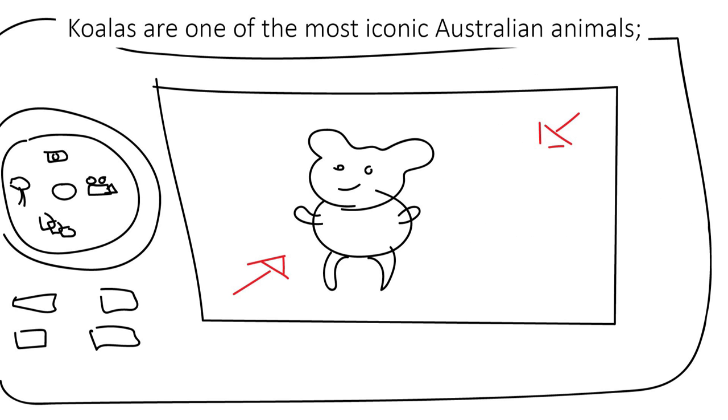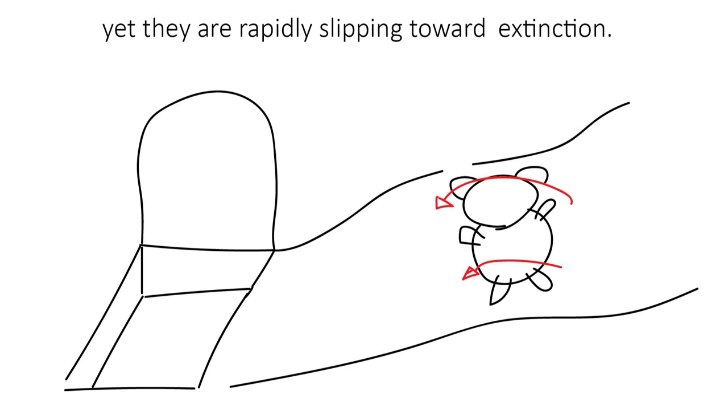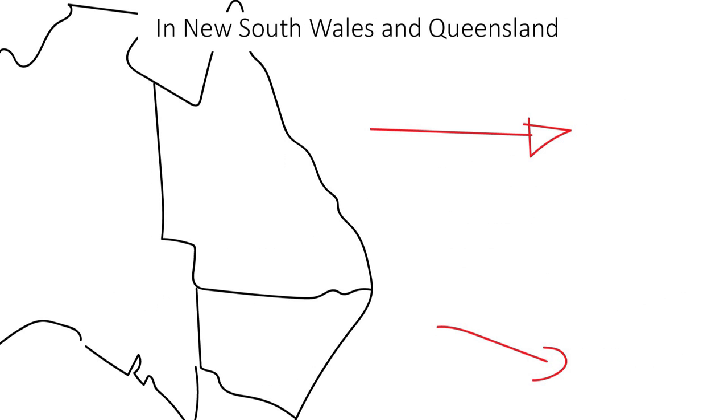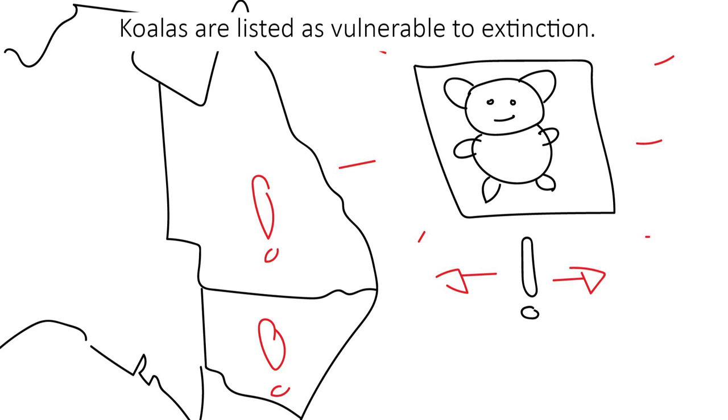Koalas are one of the most iconic Australian animals, yet they are rapidly slipping towards extinction. In New South Wales and Queensland, koalas are listed as vulnerable to extinction.